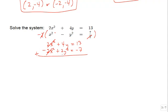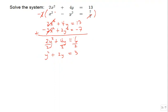Be careful: the y-squared and the y terms are not like terms, so don't add them together. We bring down both: 2y squared plus 4y, and 13 minus 7 is 6. Since all coefficients are even, we divide everything by 2 to simplify, giving us y squared plus 2y equals 3. This is a quadratic equation.